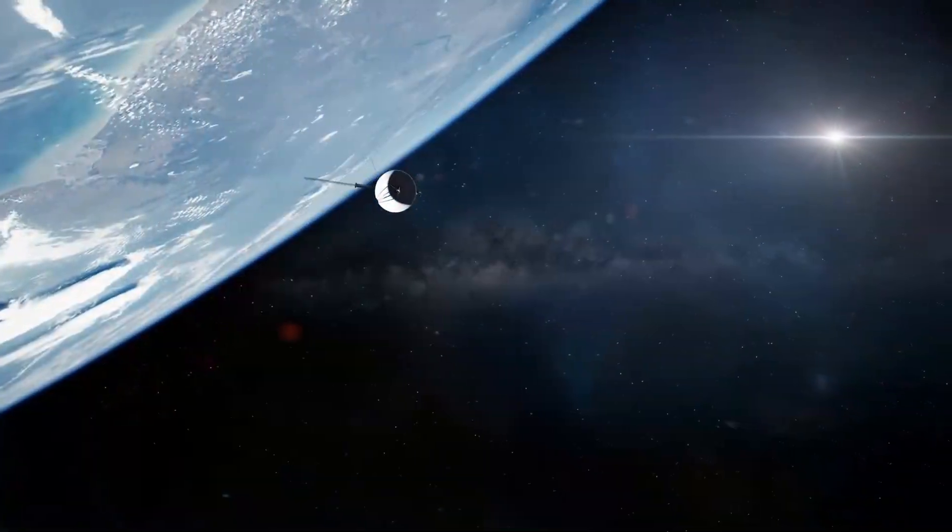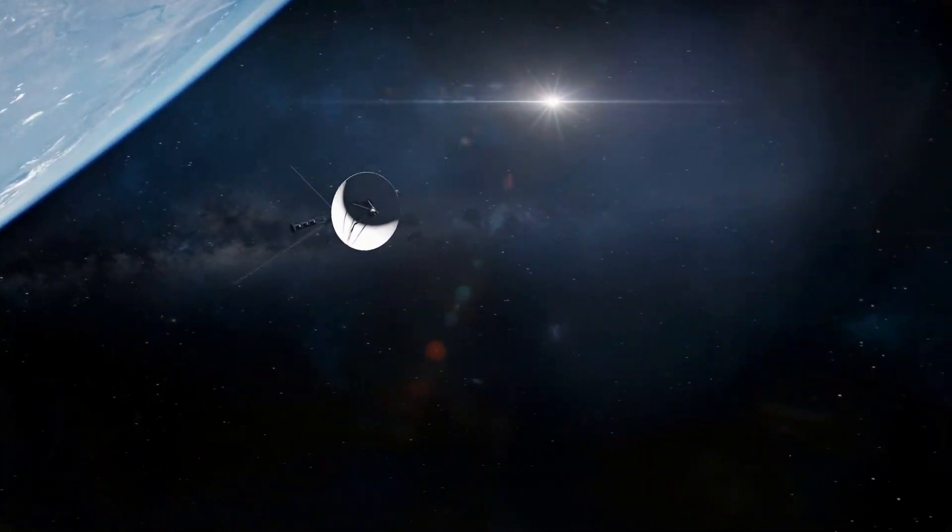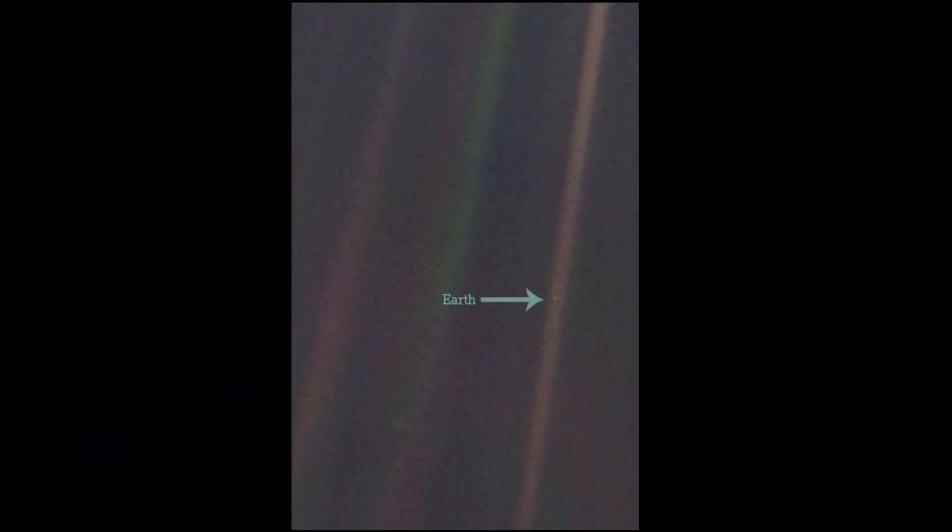Hello Earthlings, on 14th of February 1990, NASA's space probe Voyager 1 sent this photograph of Earth captured from an incredible distance of 6 billion kilometers. Famously known as Pale Blue Dot, it remains the furthest photograph ever taken of Earth.